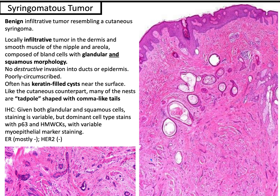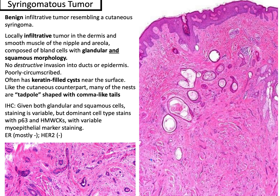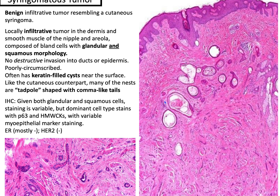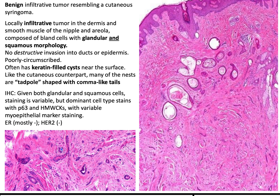Syringomatous tumor is a benign infiltrative tumor resembling a cutaneous syringoma. Tying it with dermpath — syringoma is one of the four paisley tie differentials. My acronym is 'Dapper Manly Men Sport Paisley Ties': D is Desmoplastic Trichoepithelioma, Manly is Morpheaform Basal Cell Carcinoma (also called Infiltrated Basal Cell Carcinoma — they're the same thing), Microcystic Adnexal Carcinoma, and Sport is Syringoma. It kind of looks like tadpole-shaped epithelium with comma-like tails.